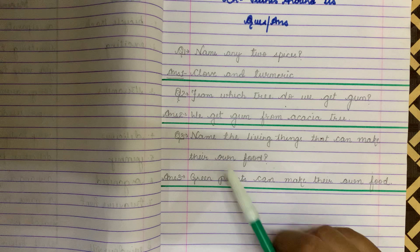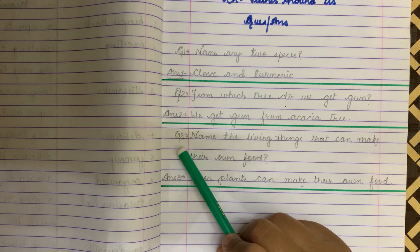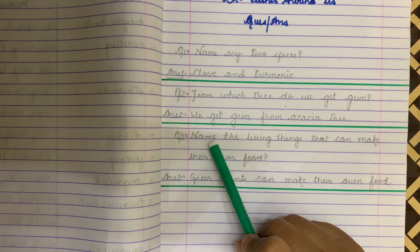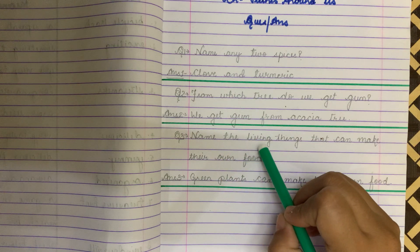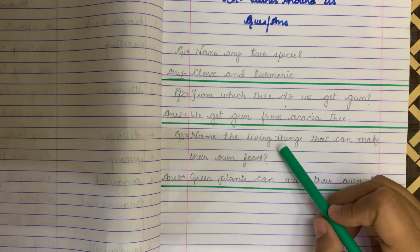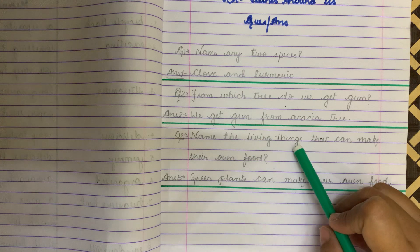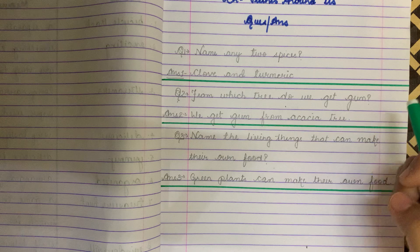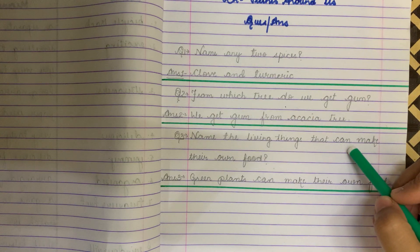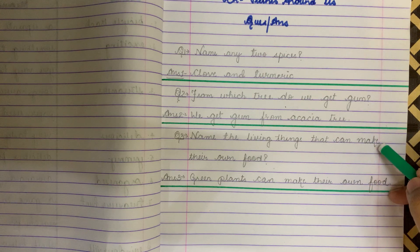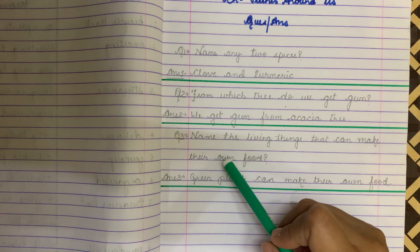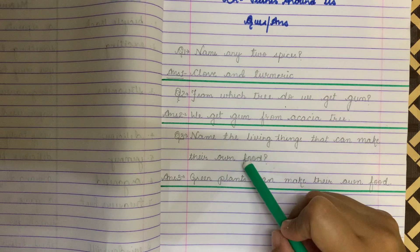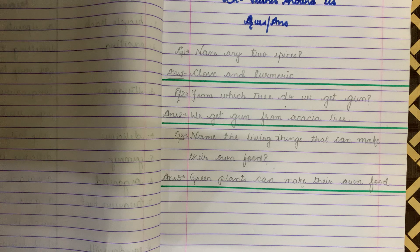Leave one line, draw a line with a sketch pen, and come to question number 3: Name the living things that can make their own food. You have to tell the name of the living thing that can make its own food. Green plants make their own food. So write down the answer.